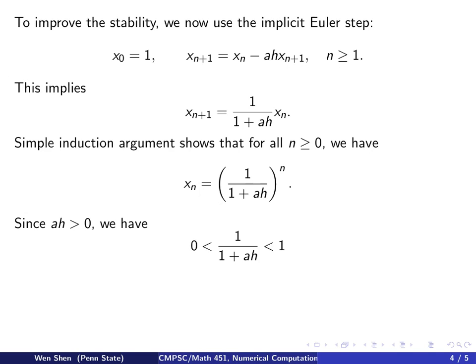Since ah > 0, we have 0 < 1/(1+ah) < 1. This means as n grows, you are multiplying x with a factor strictly less than 1. In the limit, it goes to 0.